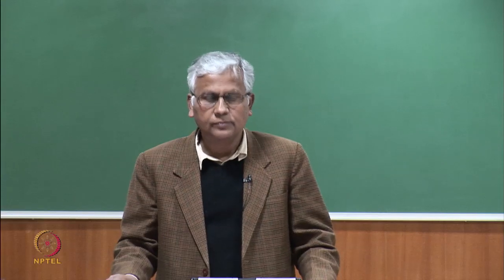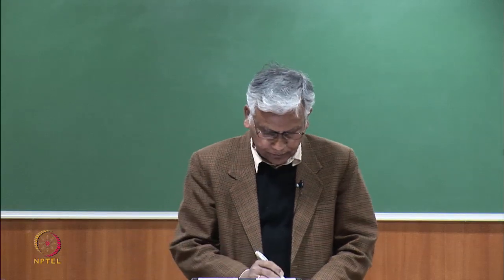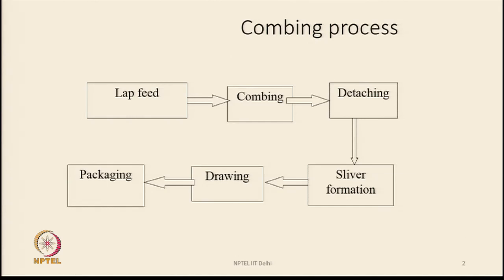Today we are going to discuss the Comber timing diagram. In this slide you can see the depiction of the combing process. We have to feed the lap, then there will be combing operations. Once combing is over, we go for detaching of the combed fringe, collect the fringe and make a sliver by arranging the fringes in a specific manner and combining them together. Once the sliver is formed, it goes for drawing operations on the drafting unit, and once drawing is over, we go for packaging the sliver produced on the combing machine.